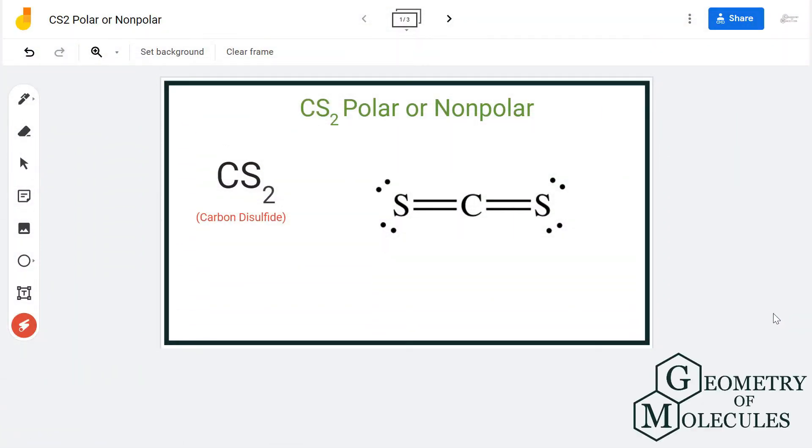Hi guys, today in this video we are going to determine the polarity for CS2 molecule. It's a chemical formula for carbon disulfide. To understand its polarity, we will first look at its Lewis structure.